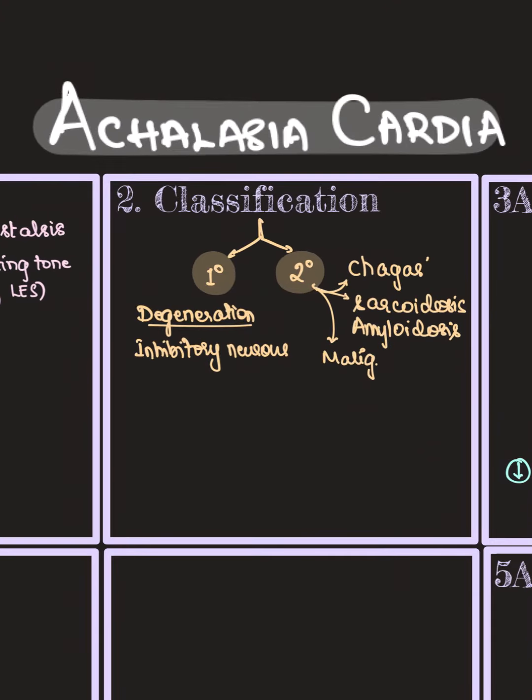Coming to the classification, it can occur primarily right from birth due to degeneration of the inhibitory neurons, or secondarily as a result of infections or malignancy. Infections like Chagas disease can cause this, or autoimmune conditions like sarcoidosis or amyloidosis can also result in achalasia cardia. It can be genetic, infectious, invasive, or autoimmune in cause.